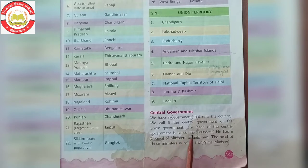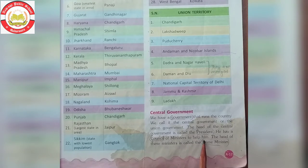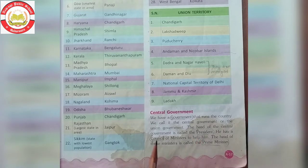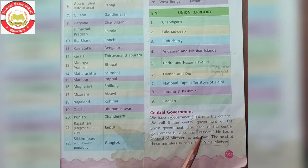The head of the Central Government is called the President. Central Government ka head kaun kehlaata hai? President. He has a council of ministers to help him. Council ka matlab hota hai group — samiti ya parishad. So, iski help ke liye group of ministers hote hain. The head of these ministers is called the Prime Minister. Lekin sabse bade head kaun hain? President.